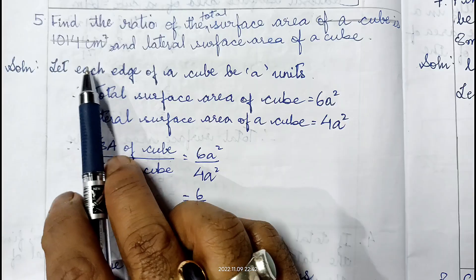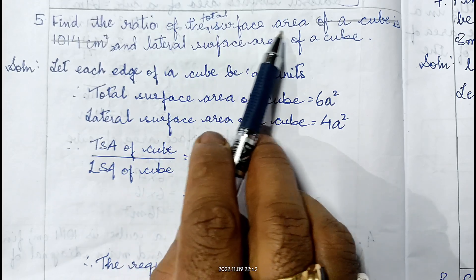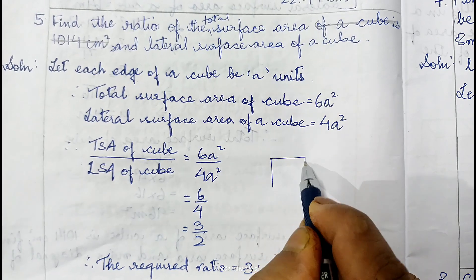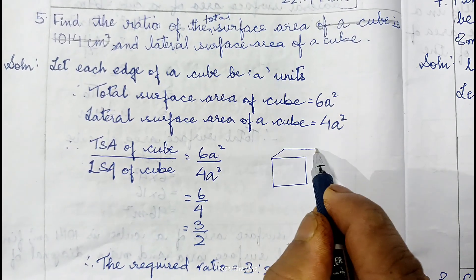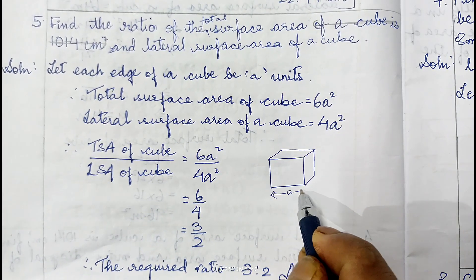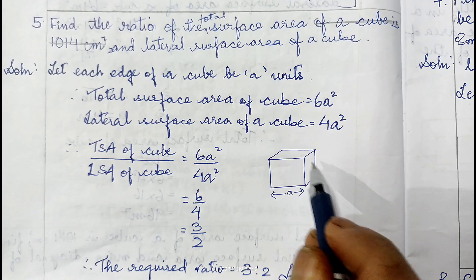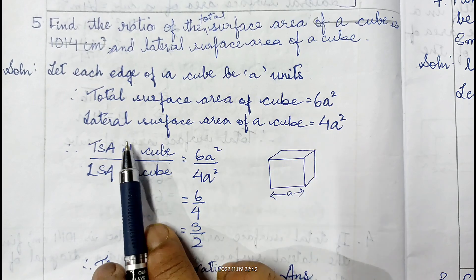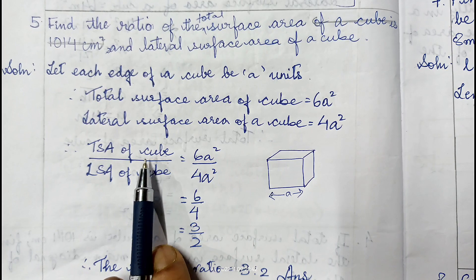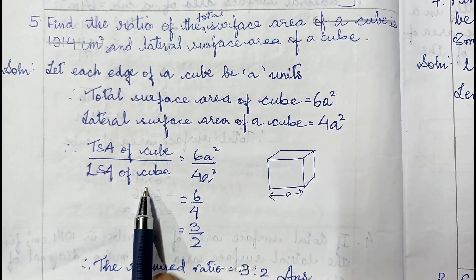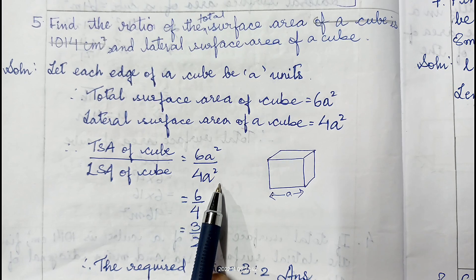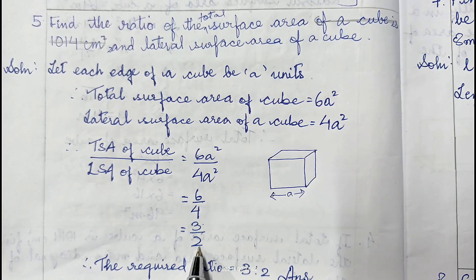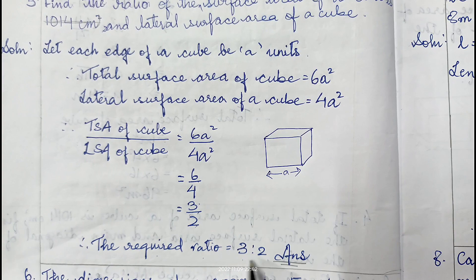Question 5: Find the ratio of the total surface area to the lateral surface area of a cube. Let each edge be A. Total surface area = 6A², lateral surface area = 4A². Ratio = 6A² / 4A² = 6/4 = 3/2. Therefore the required ratio is 3:2.